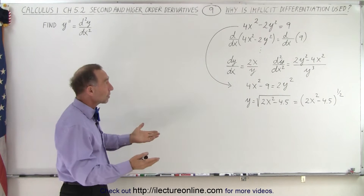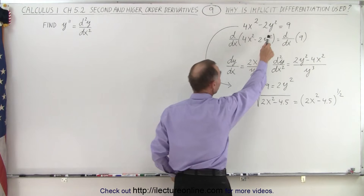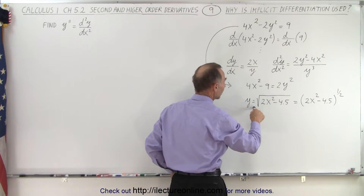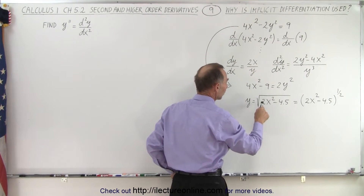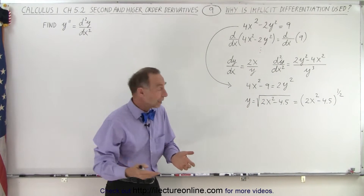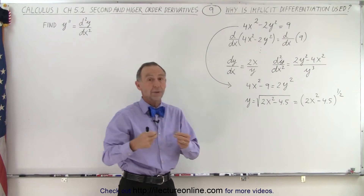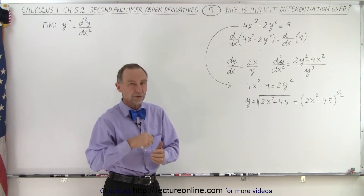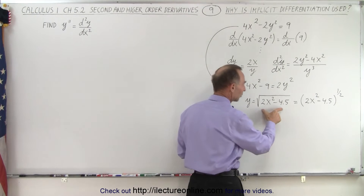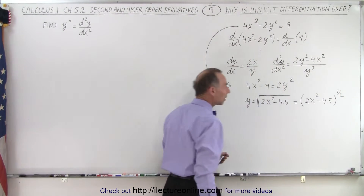So what we're going to do now is show you that if we did not do that — if instead we solve this equation for y, which I did over here — this becomes y equals the square root of 2x squared minus 4.5. Then essentially we can take the derivative of this and the second derivative and we should end up with the exact same answer. So I don't like radicals, so I wrote it in terms of this to the one-half power.